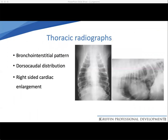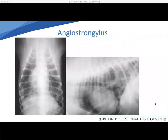It's likely we'll take thoracic radiographs, as these animals typically present with respiratory signs. We'll typically see a bronchointerstitial pattern with a dorsal caudal distribution, and we may also see right-sided cardiac enlargement. Looking at the radiographs on the right side of the screen, you can see a patchy distribution mainly in the caudodorsal lung fields on both the dorsoventral view and the lateral view, where it is most obvious in the caudal lung fields.